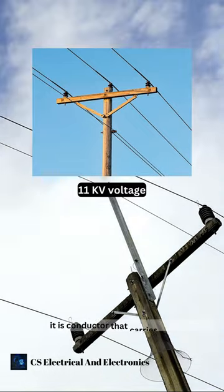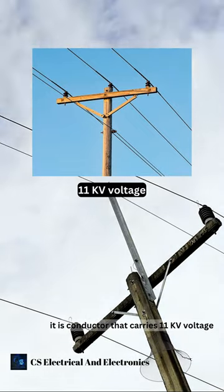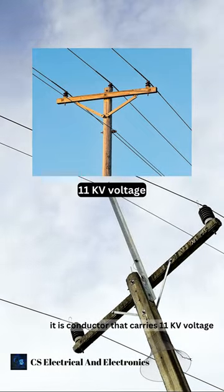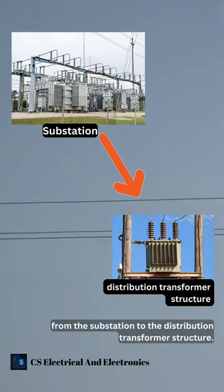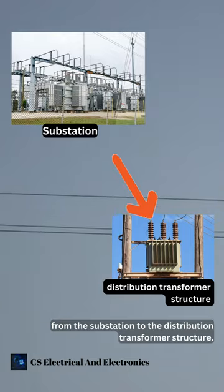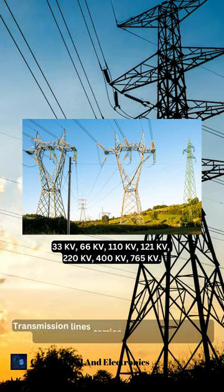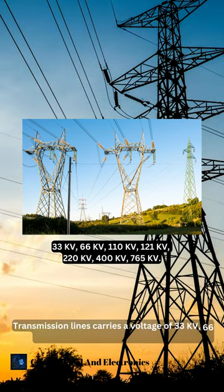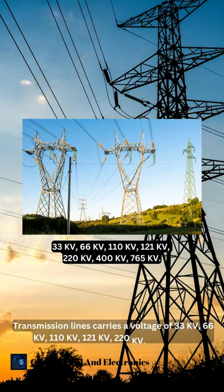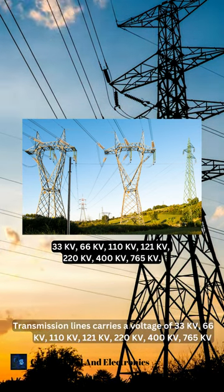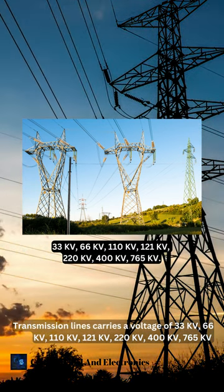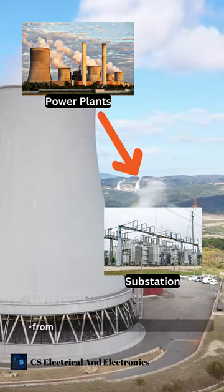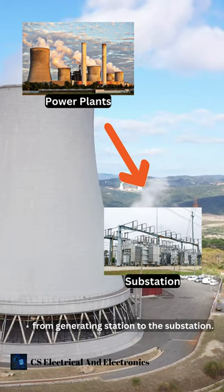HT line stands for High Tension lines, and it is a conductor that carries 11kV voltage from the substation to the distribution transformer structure. Transmission line is a conductor that carries 33kV, 66kV, 110kV, up to 765kV voltage from the generating station to the substation.